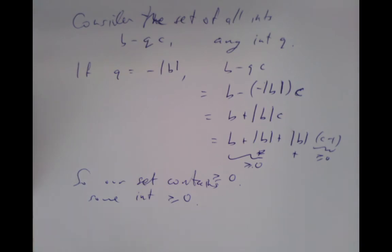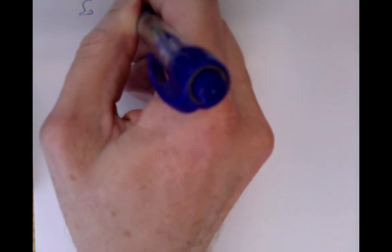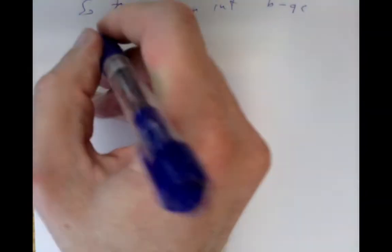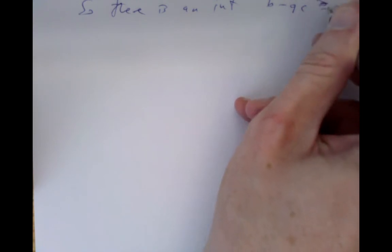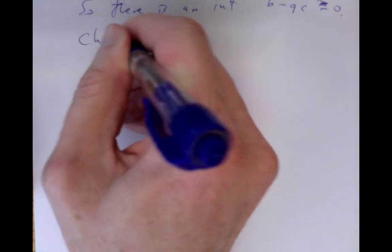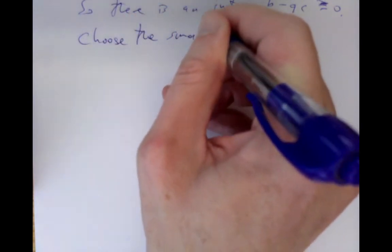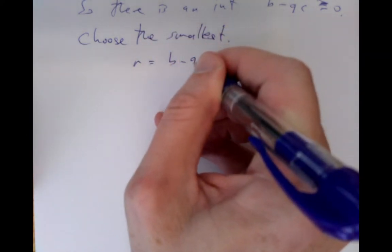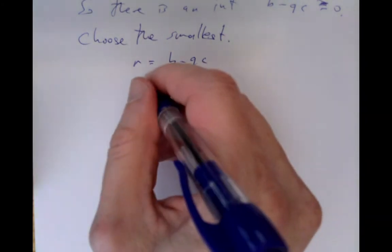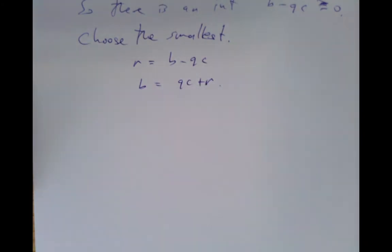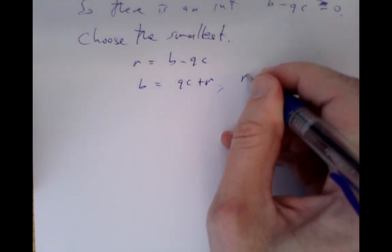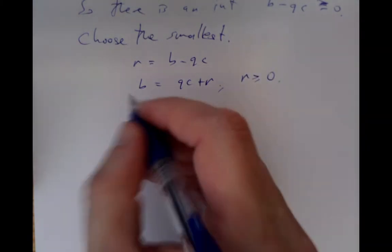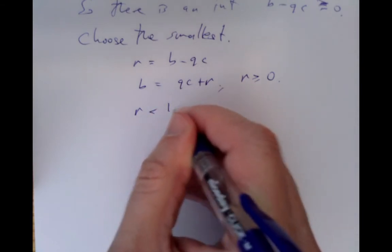There is an integer of the form b minus q times c which is greater than or equal to zero. So there is one, and we choose the smallest. By the principle of well-ordering, there is a smallest such one — call it r equals b minus q times c. We've established that b equals q times c plus r, which is the property we needed, and r is greater than or equal to zero.